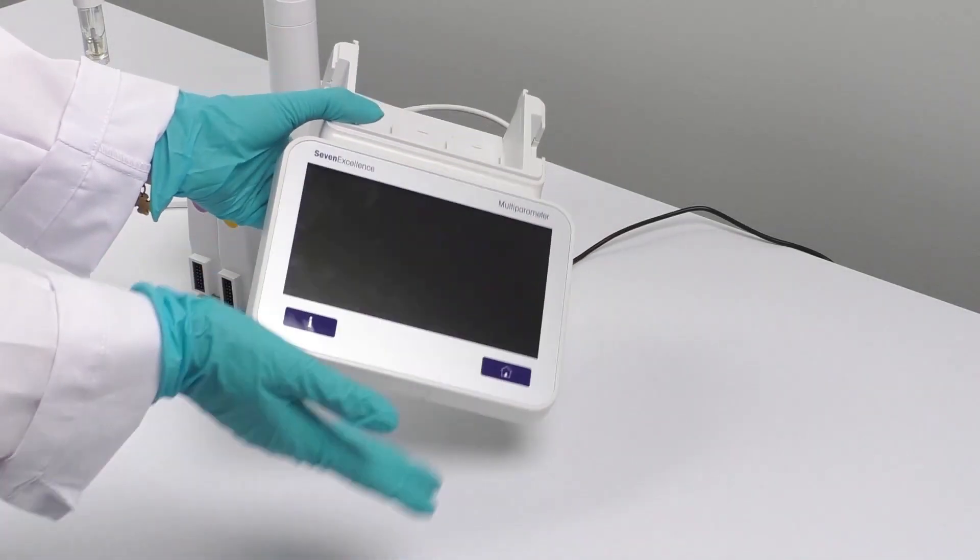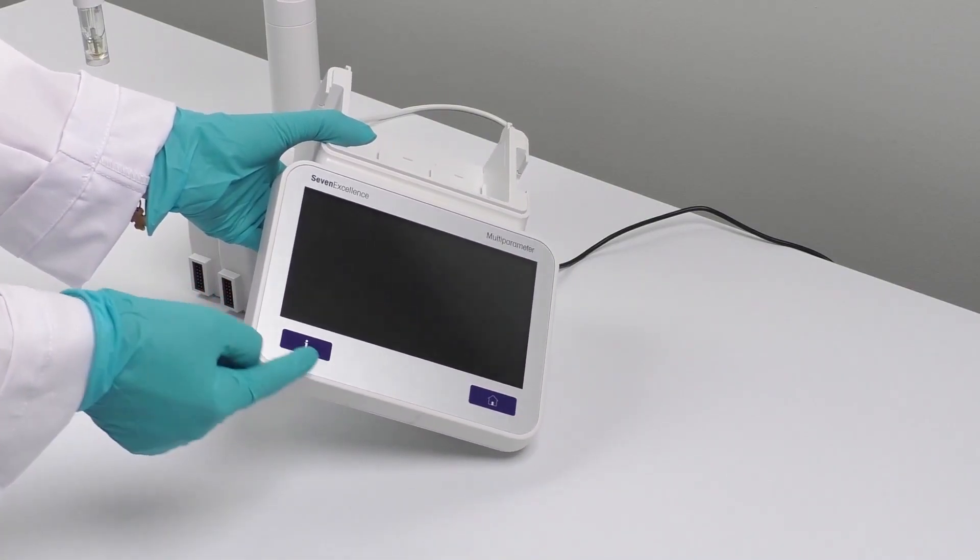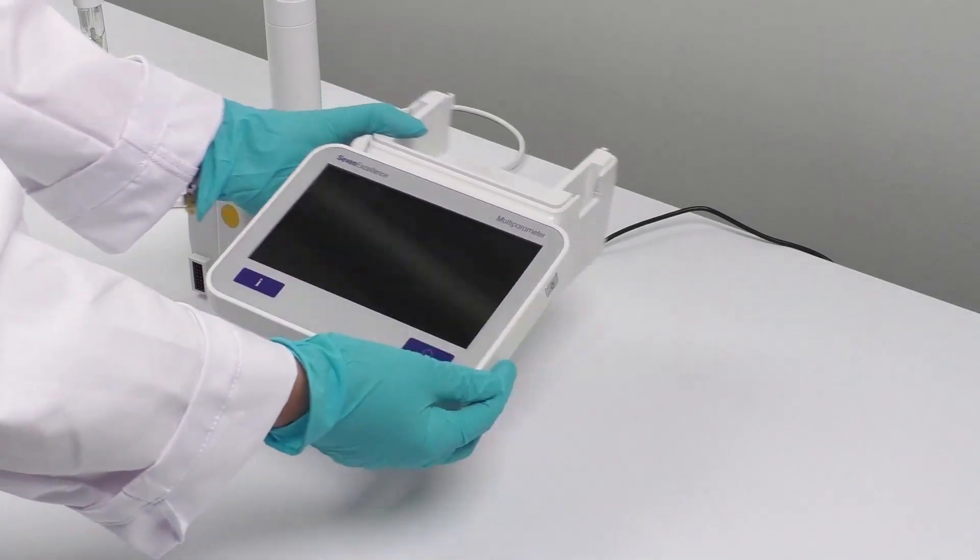Lastly, on the front of the meter, you'll find a sleek and intuitive touchscreen with two buttons. The I button provides information about the meter's hardware and software, while the home button takes you back to the home screen from any menu.